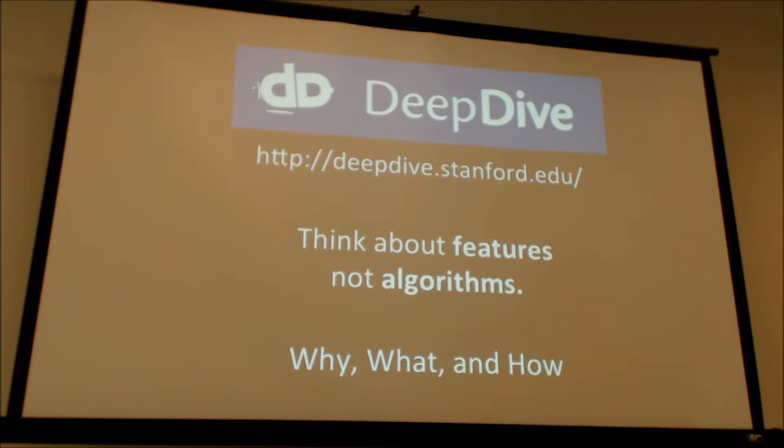The system can read in a bunch of unstructured information and populate a database, and maybe do some predictive analytics on top. The core interesting piece from the CS side is that since we've raised this level of abstraction, the system has a lot more work to do under the covers. A lot of our research papers, by volume, are about how to solve difficult statistical inference problems before the heat death of the universe.